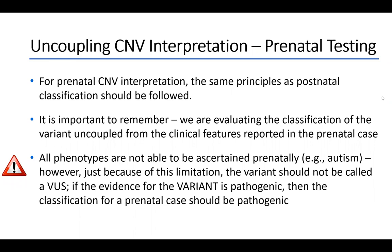For prenatal CMV interpretation, the same principles as postnatal should be followed. We're evaluating the classification of the variant uncoupled from the clinical features reported in the prenatal case. We can't ascertain all phenotypes prenatally — for example, developmental disorders like autism may not present with any overt structural defects on ultrasound. Just because of that limitation, you shouldn't call a variant a variant of uncertain significance based on the prenatal phenotype. If the evidence exists that the variant is pathogenic, then the classification for a prenatal case should be pathogenic.